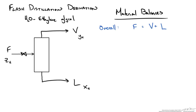This overall balance is for steady-state operation and can be done in a batch or continuous manner. Our water component balance states that the mole fraction of water in the feed times the feed flow rate equals the mole fraction of water in the vapor times the vapor flow rate, plus the mole fraction of water in the liquid times the liquid flow rate.